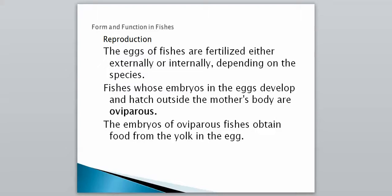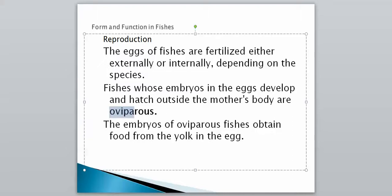Fish whose embryos develop and hatch outside the mother's body are called oviparous animals. With external fertilization, you are known as an oviparous fish. The embryos of oviparous fishes obtain food from the yolk in the egg. The female lays her eggs, the male fertilizes them outside the mother's body, and the embryos feed on the yolk inside the egg.